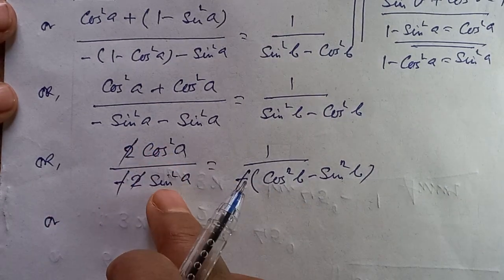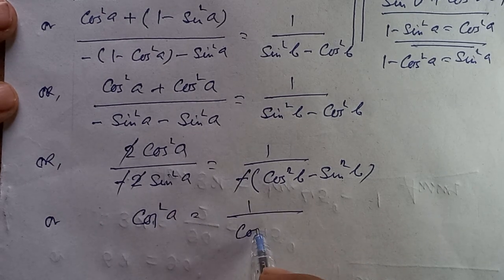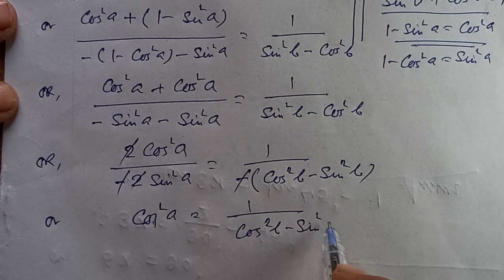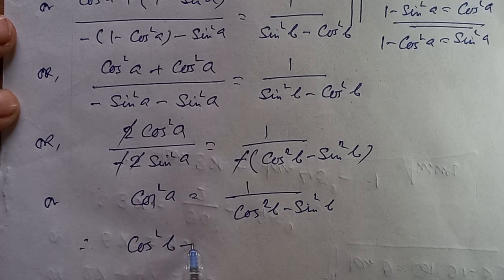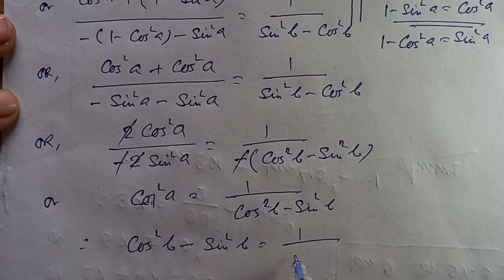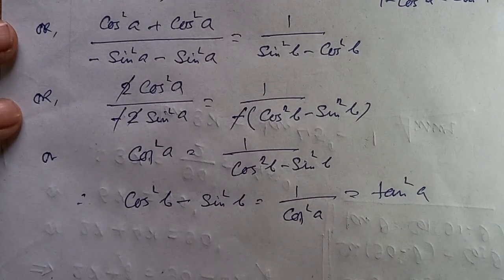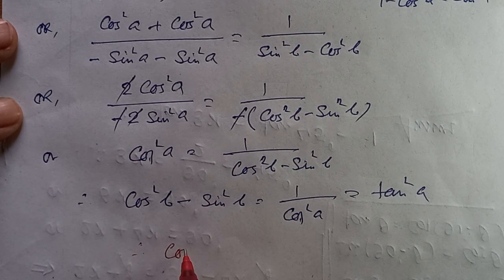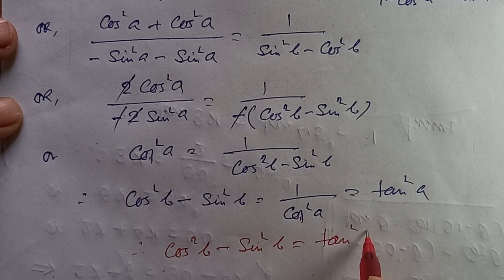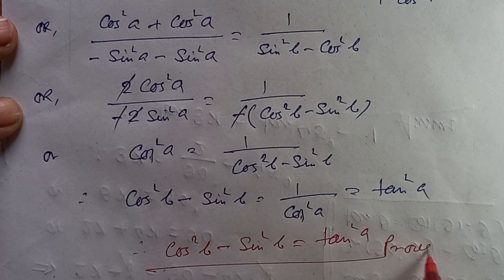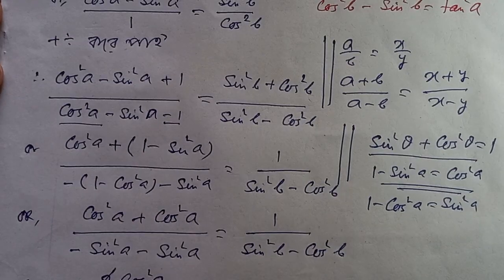Therefore, cos²b minus sin²b equals tan²a. Hence proved.